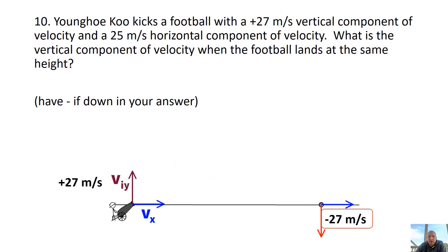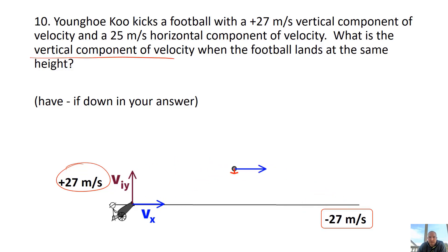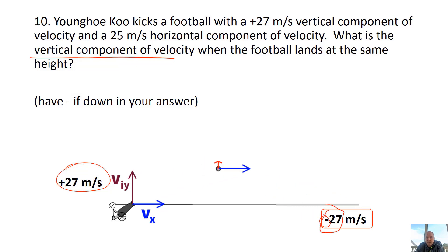Problem 10: If the initial vertical component was 27 meters per second upward, what's the vertical component when it lands? Notice what happens to the y-axis — it flips and lands at an equal and opposite value. So if it started at 27 meters per second up, it lands at 27 meters per second down. For this problem I want a negative, so the answer is negative 27 meters per second.